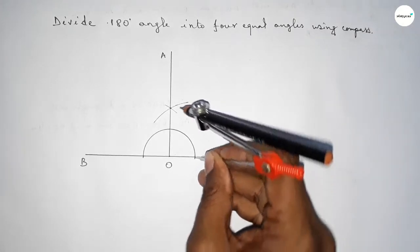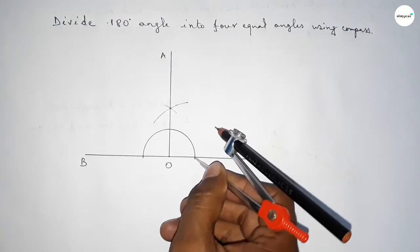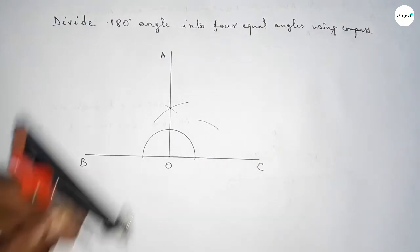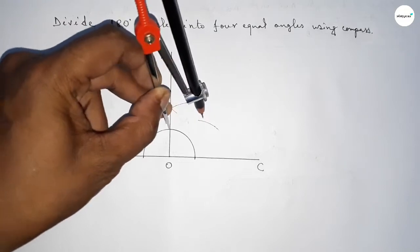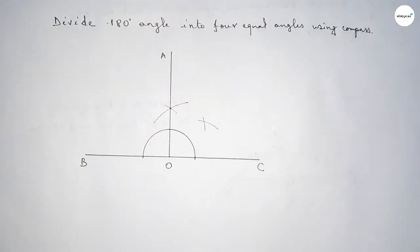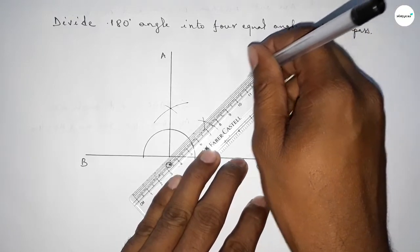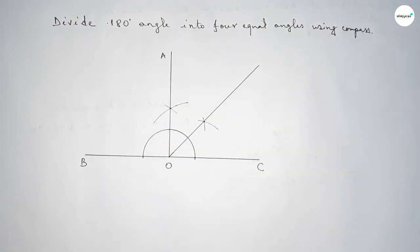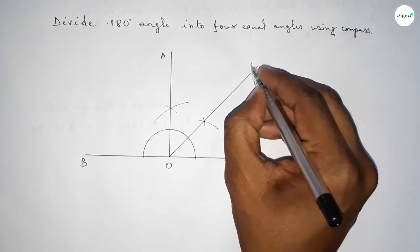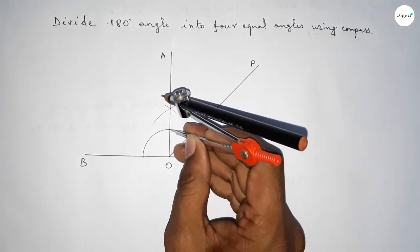Next we have to bisect angle AOC. Taking any length and drawing an arc, then putting the compass here and cutting here so both curves intersect at a point. Bisecting angle AOC, joining this line, and taking here point B.